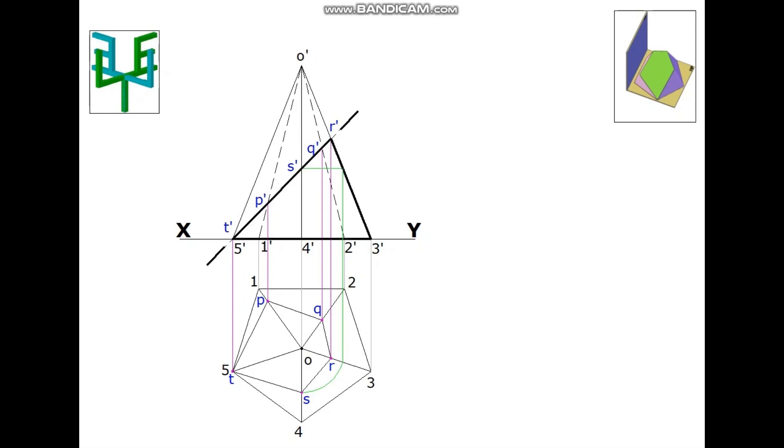After sectioning, the top portion is assumed to be removed and the required bottom portion is darkened. Sectional lines are drawn in the section region.